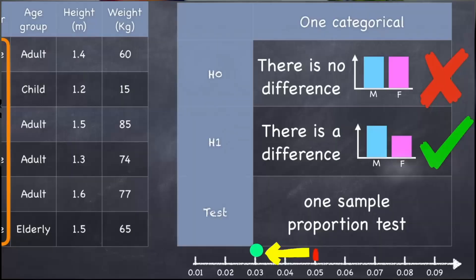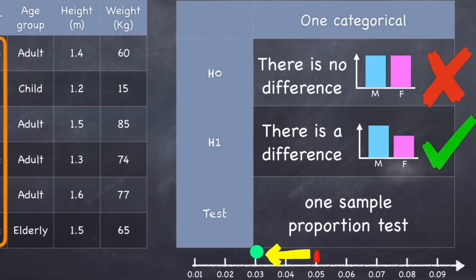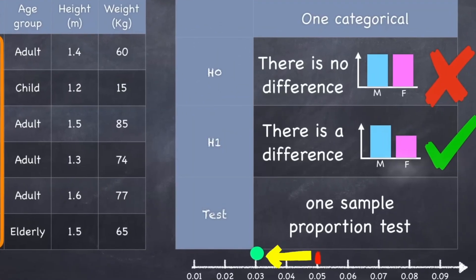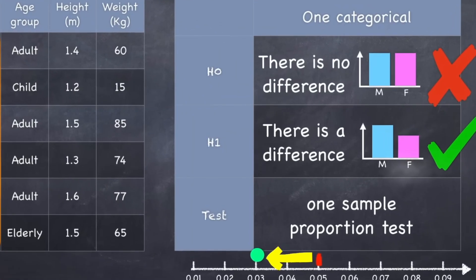Next is game balancing. Balancing a game that's challenging but fair also involves a lot of math. Developers use statistical analysis and probability to fine-tune the game mechanics, ensuring that no single strategy or element dominates. This keeps the gameplay interesting and competitive.